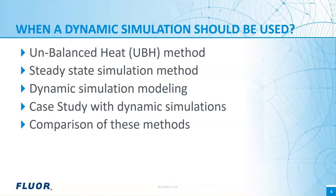First, I will give a brief introduction of three different column relief analyzing methods: the unbalanced heat method, steady-state simulation, and dynamic simulation method. Then I will show the results of these methods by case studies of two different distillation systems — the sour water stripper and the ethanol column — with global upset scenarios such as total power failure and partial power failure. In the end, I will discuss the pros and cons of these methods and shed light on where and when to apply them.